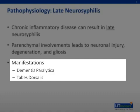In dementia paralytica, there is brain atrophy, loss of cortical architecture, meningeal thickening, and ventricular dilatation.